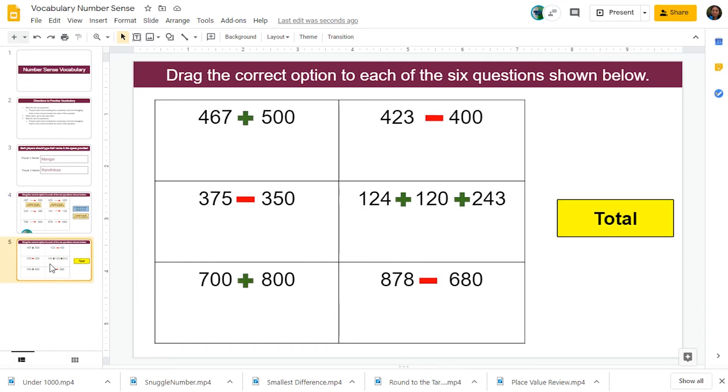Slide number five also has a similar setup. There are six questions in here, and there are certain cards that are given to you one below the other. You need to drag the correct vocabulary to match each of these questions. Have fun engaging in the number sense vocabulary activity.